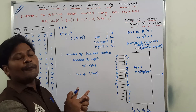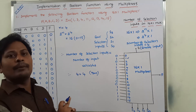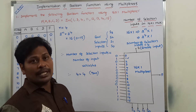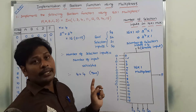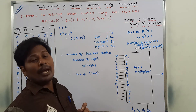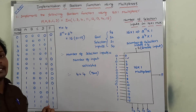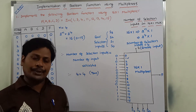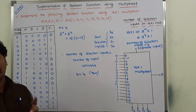So, whenever the number of selection inputs equals the number of input variables in the given Boolean function, we simply draw the 16-by-1 multiplexer, mention 4 selection inputs, label inputs 0 to 15, assign input value 1 for present minterms, and 0 for remaining minterms. These values are the outputs of the Boolean function. In this way, we implement the given Boolean function using a 16-by-1 multiplexer.